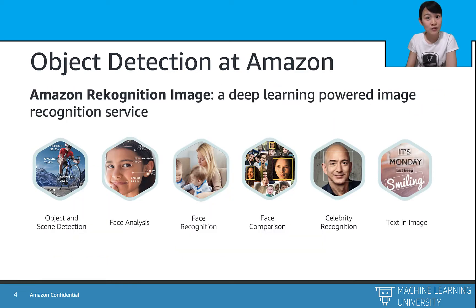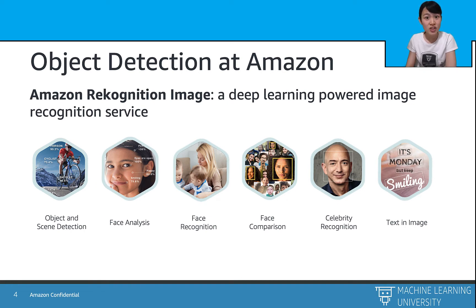Within Amazon, object detection models are widely applied to a variety of products. Amazon Rekognition is a simple image recognition service powered by deep learning. It can detect objects, scenes, and faces, extract text, recognize celebrities, and identify improper content in images. It also allows you to search and compare faces. Amazon Rekognition is based on proven, highly scalable deep learning techniques developed by Amazon computer vision scientists to analyze billions of images daily. The service returns a confidence score for everything it identifies, so you can make informed decisions about how to use the results.